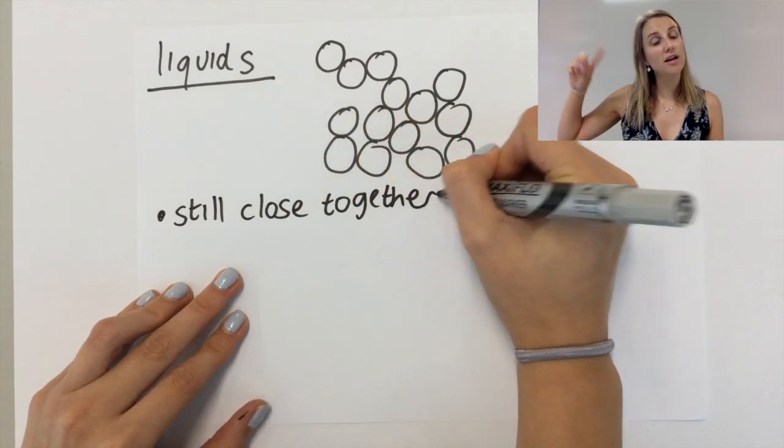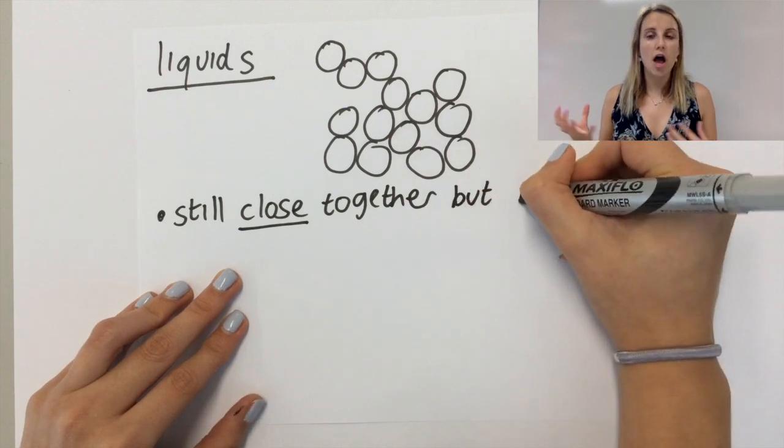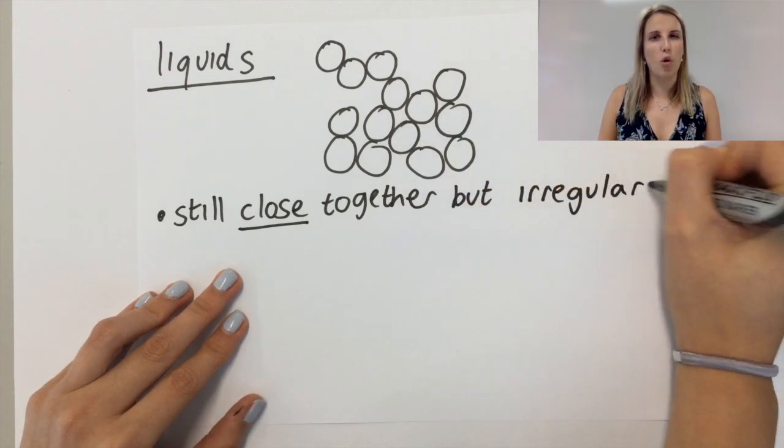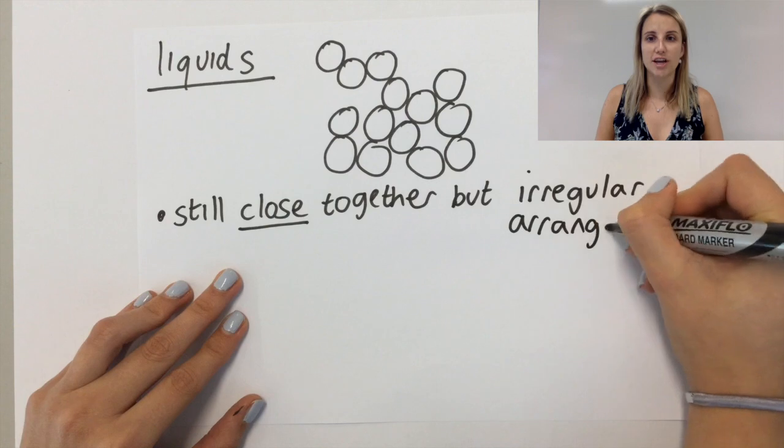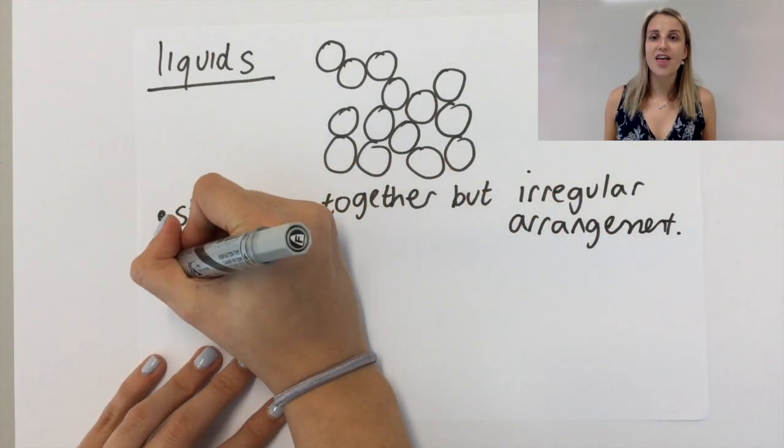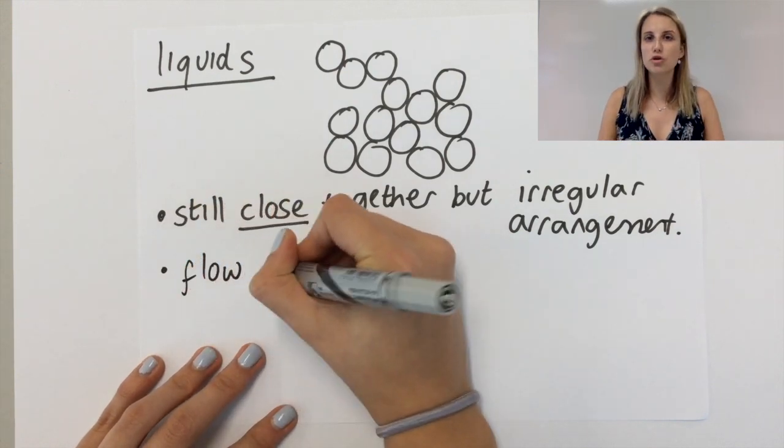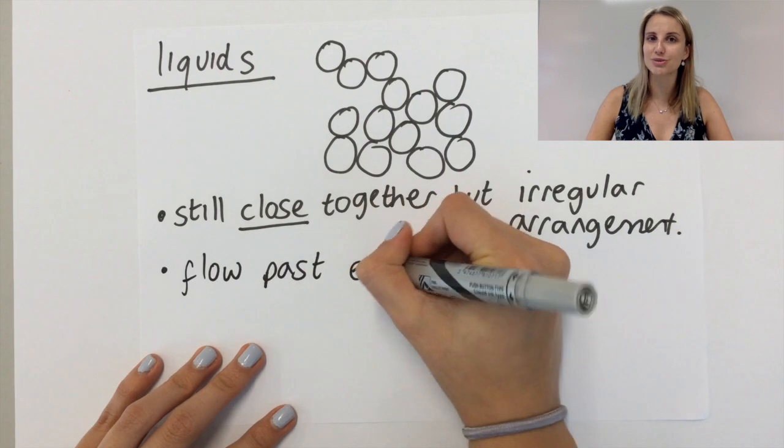So you can see that my particles are still, the majority of them are touching each other, but they're not in rows anymore like they were before with the solid. The way that these particles move is also different. They flow past each other so they have a little bit more movement than those solid particles did before.